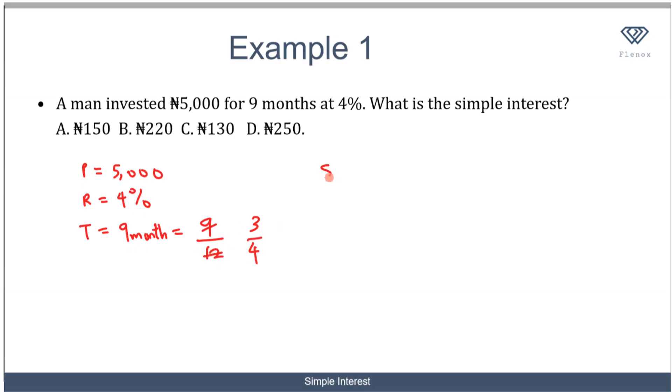Now I can calculate the simple interest, which is the principal times rate times time over 100. That would be 5,000 times the rate, which is 4, times the time, which is 3/4 years, over 100. Four cancels four, and two zeros cancel these two zeros, so we're left with 50 times 3, which equals 150.